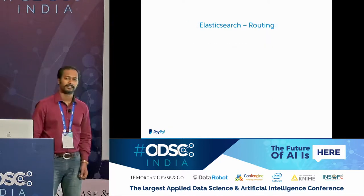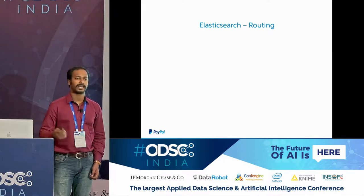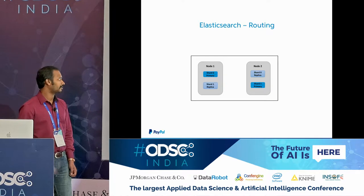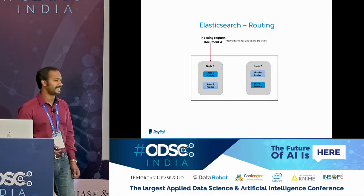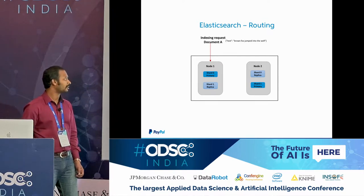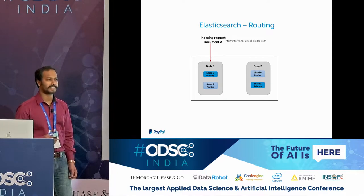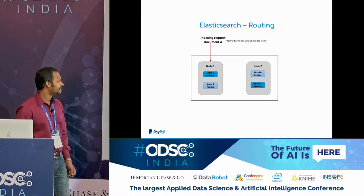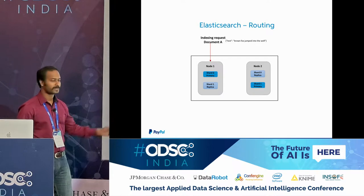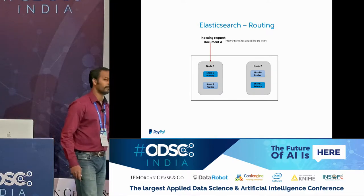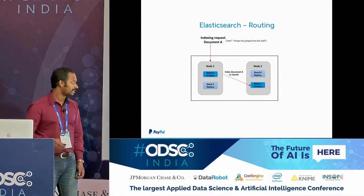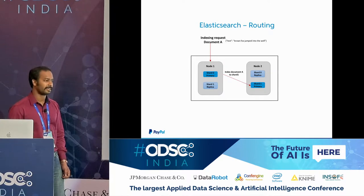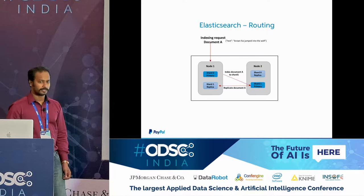Next I'll talk about routing — what happens when you insert a document into Elasticsearch. Let's say we have node one and node two, and I try to insert document A with a particular ID. Elasticsearch uses its own routing algorithm: it uses the ID to decide which shard the document goes to. It decides document A goes to shard one. Elasticsearch always writes to the primary shard first, then replicates to the replica, and then sends the response back to the user. We call writing in Elasticsearch 'indexing.'